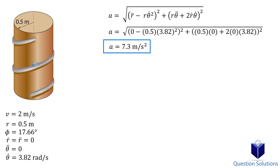In this problem, there is actually a z component for velocity. However, it's a constant, so when we take the derivative of the z velocity to find the z acceleration, it becomes zero.